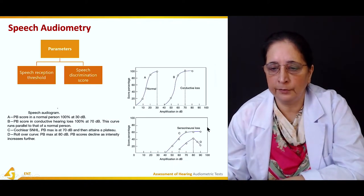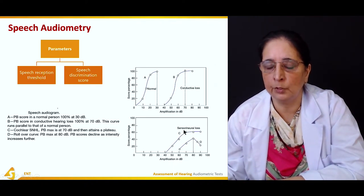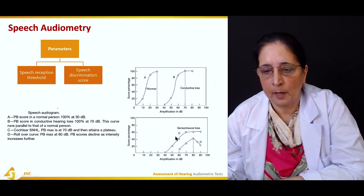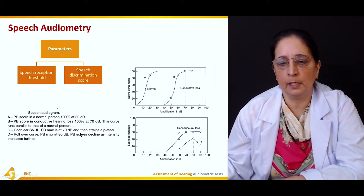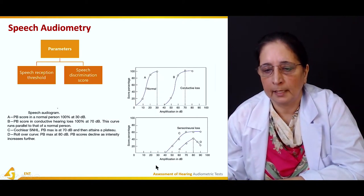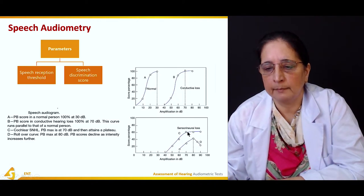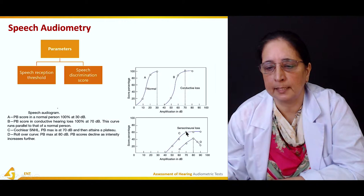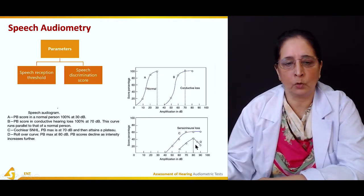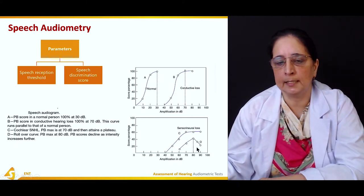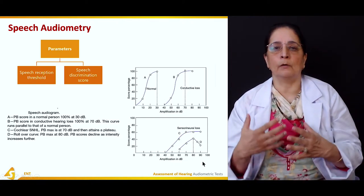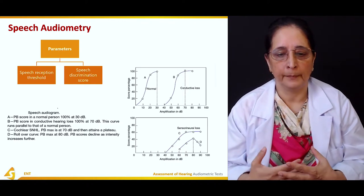In graph C, for patients with sensorineural hearing loss, the score is about 60% at 40 decibels. It reaches a maximum around 70 decibels and then attains a plateau. In the rollover curve, the score is maximum at 80 decibels and then decreases as intensity increases further.